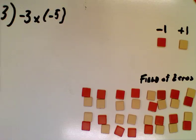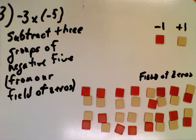So now we look at negative 3 times negative 5, or negative 3 groups of negative 5, but of course we're not going to say that. We're going to state that a different way. So if you want, pause the video right now and think about how we would state this multiplication in the same way we did the previous question. So in this case, we're going to subtract 3 groups of negative 5 from our field of zeros. So let's do that.